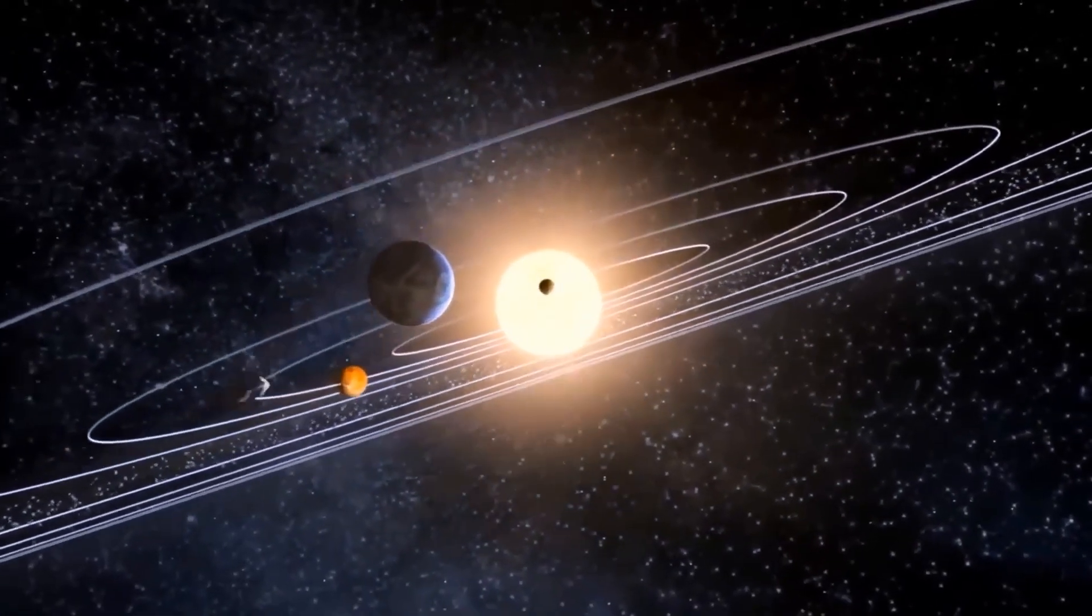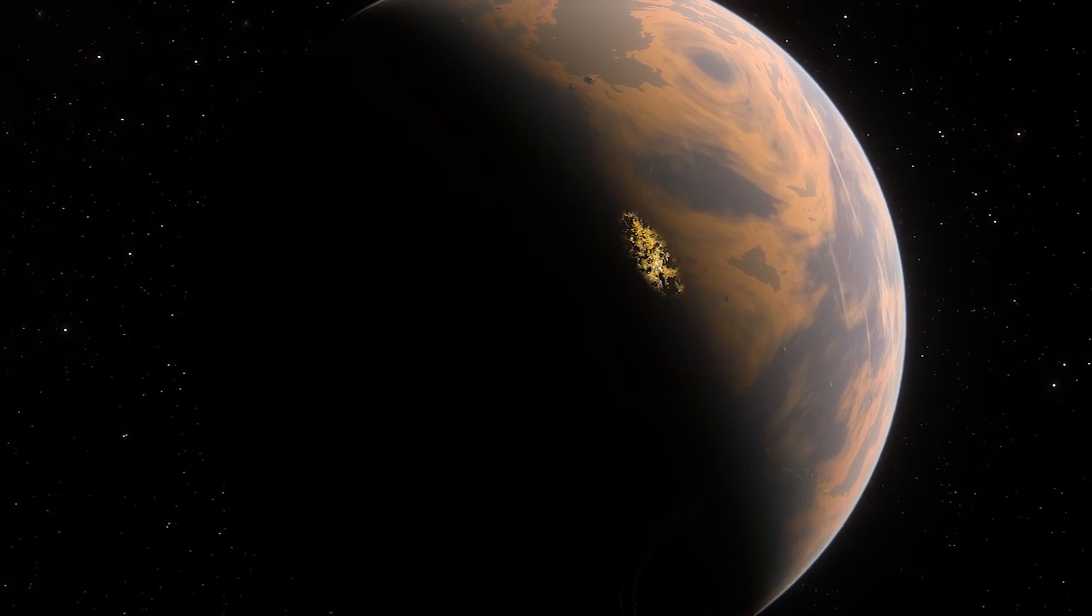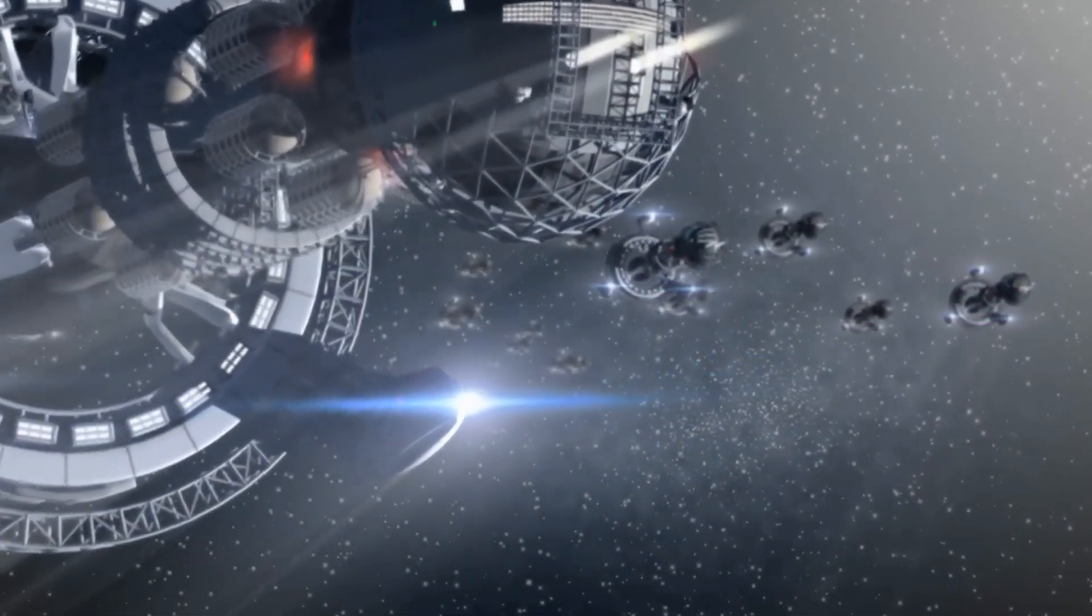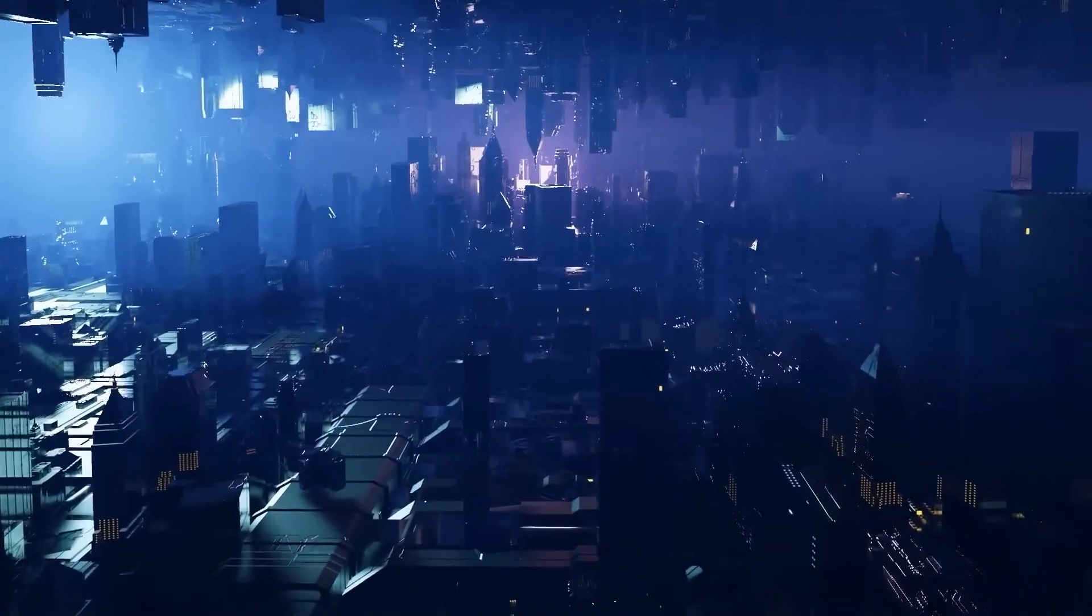Scientists have noticed some unusual signals from the solar system that's closest to ours. It turns out that the signal is from the system's planet, Proxima B.